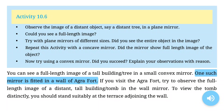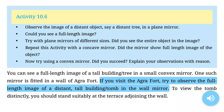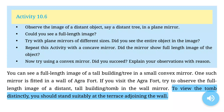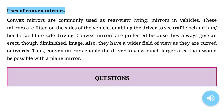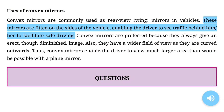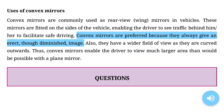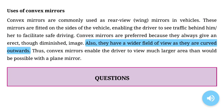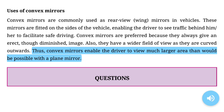One such mirror is fitted in a wall of Agra Fort. If you visit the Agra Fort, try to observe the full length image of a distant tall building or tomb in the wall mirror. Uses of convex mirrors: Convex mirrors are commonly used as rear-view wing mirrors in vehicles. These mirrors are fitted on the sides of the vehicle, enabling the driver to see traffic behind to facilitate safe driving. Convex mirrors are preferred because they always give an erect, though diminished, image. Also, they have a wider field of view as they are curved outwards. Thus, convex mirrors enable the driver to view much larger area than would be possible with a plane mirror.